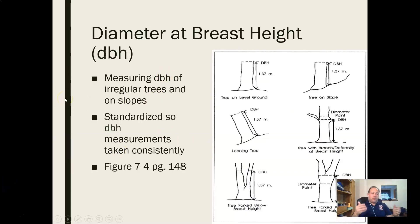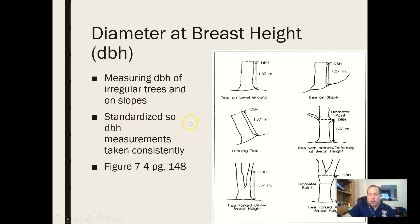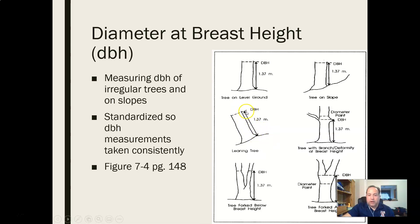You're going to deal with irregular trees and slope, so you want standardized ways of doing things. On level ground: go four and a half feet, measure DBH. On a slope: go to the uphill side of the tree and measure DBH there. If the tree is leaning: find the uphill side, go with the lean of the tree, go four and a half feet up, and measure.